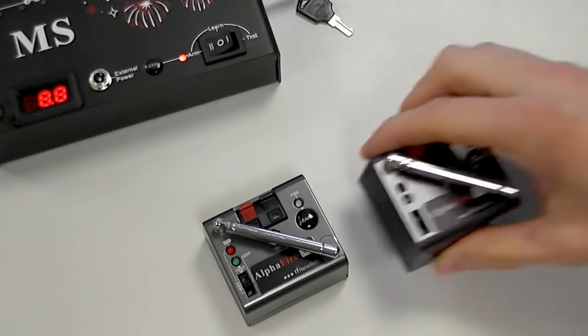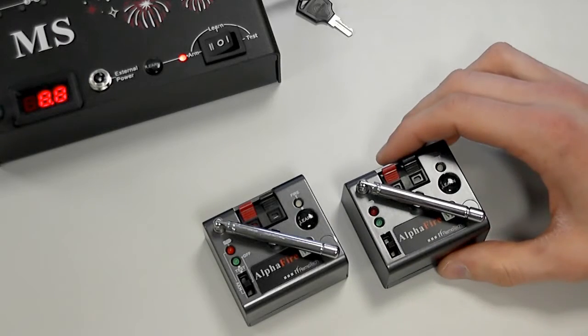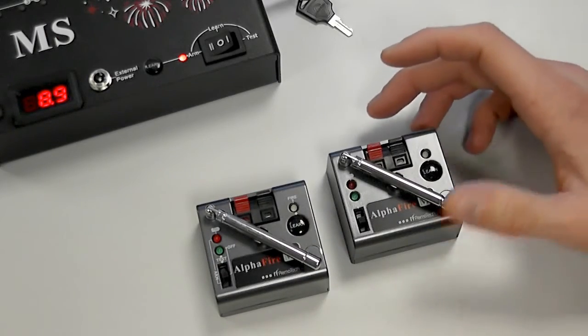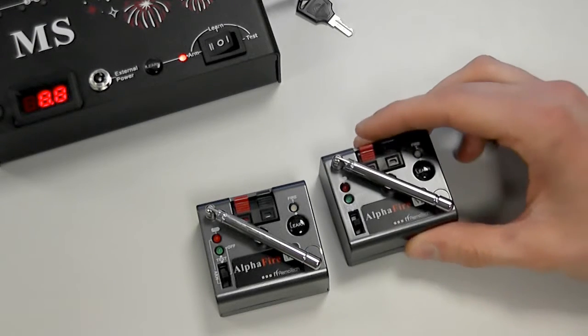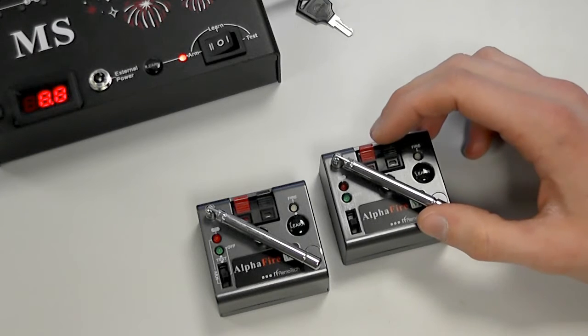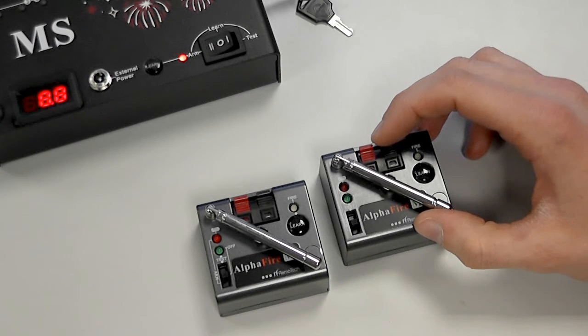Something else I want to show you are these single cue receivers here. These single cue receivers are part of the 12 cue distributed package that we sell and also the 4 cue package or you can just buy them on their own. The great thing about them is that they can also be used with the 12 channel system that I've just shown you.